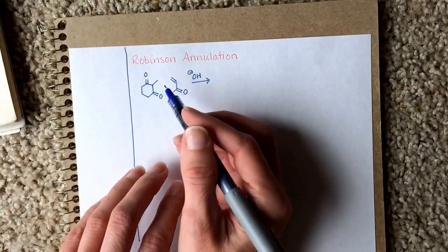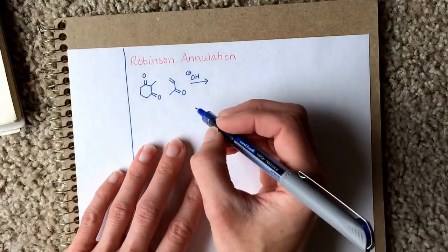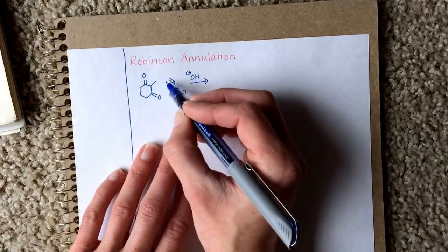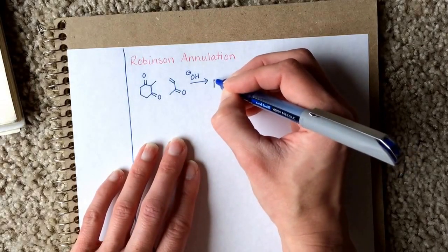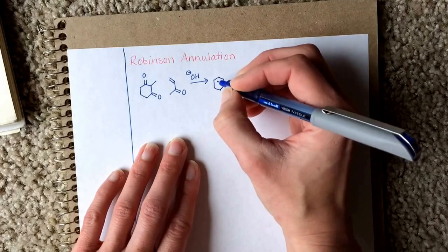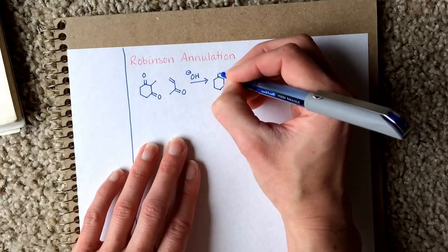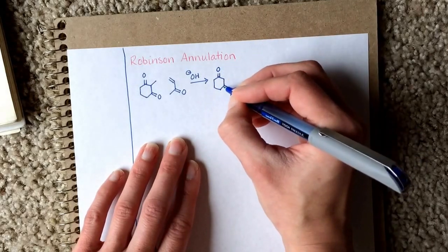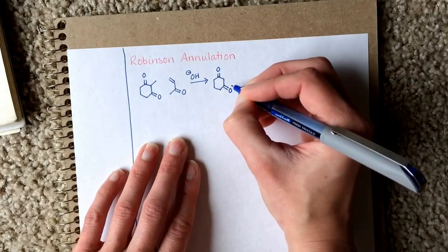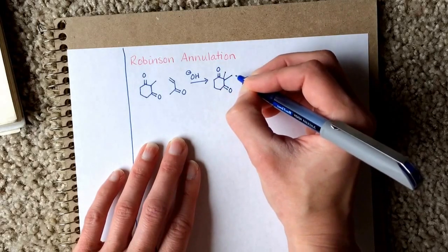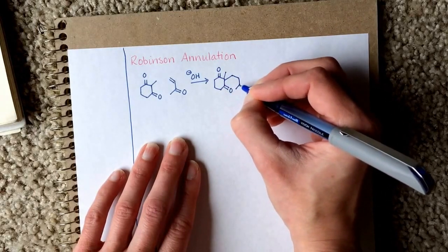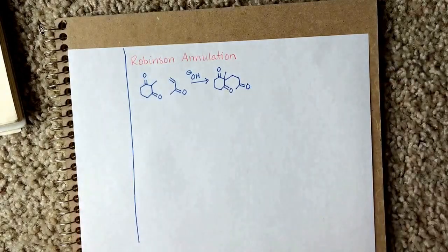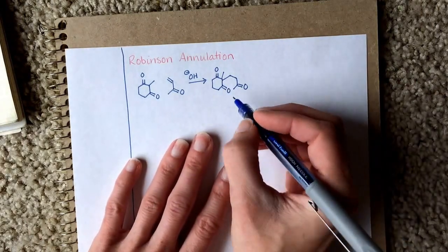We don't need a very strong base to convert this diketone into an enolate. We can just use something like hydroxide — that'll turn this into an enolate and it'll attack here at the beta site. We will get a product that looks like this: one, two, three, four initially.